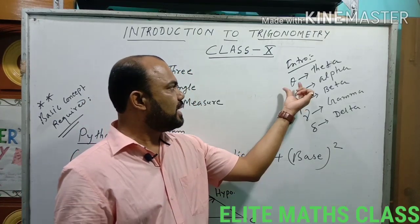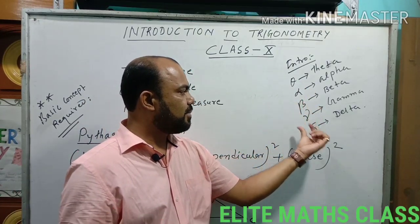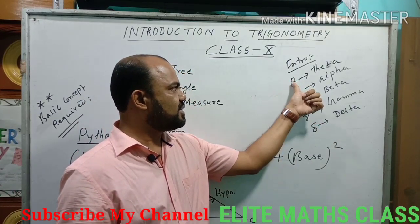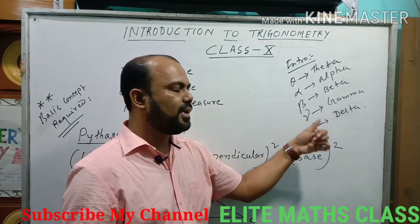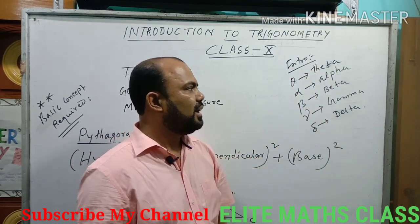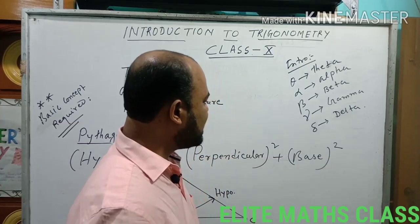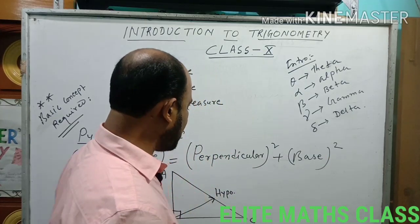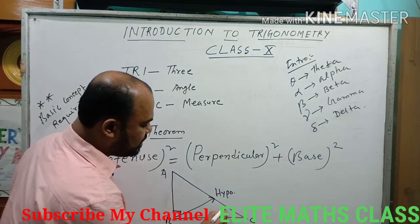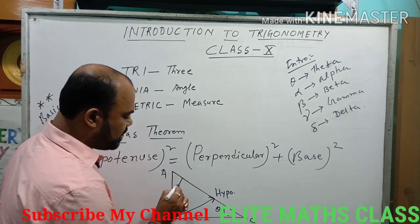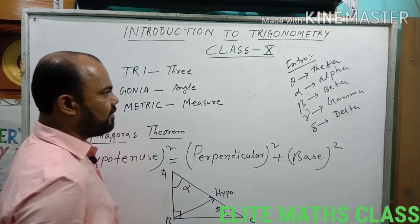Now there are some new notations you will have to use here: theta, alpha, beta, gamma, and delta. These Greek symbols are used to denote the angles of the triangle. For example, you may denote this angle as theta or you may denote this angle as alpha.